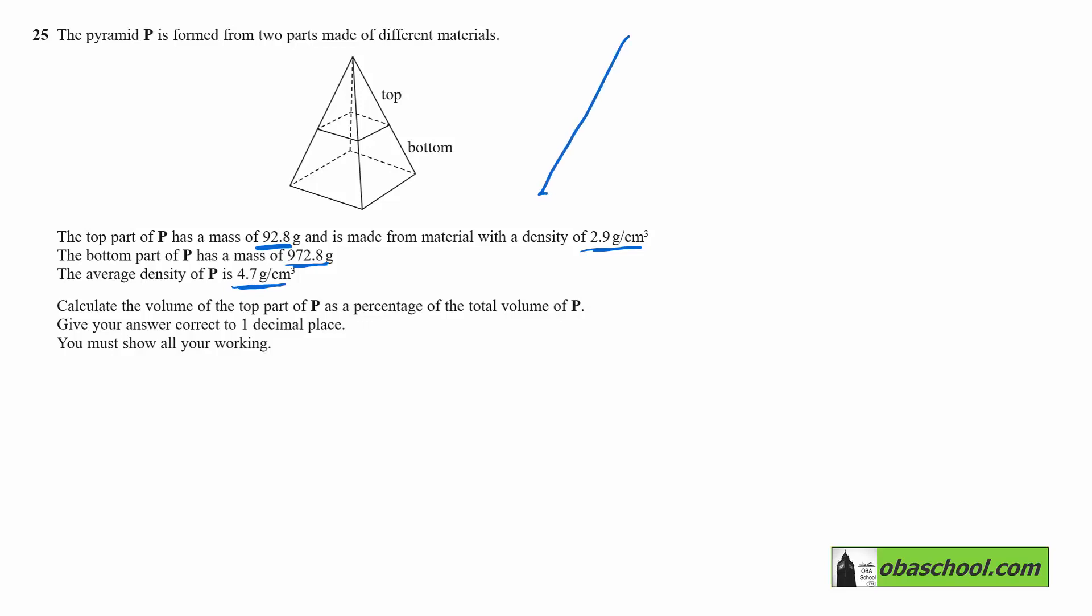The density mass volume triangle could be useful here. Density being the rate goes in the bottom corner and it's equal to the mass divided by the volume.